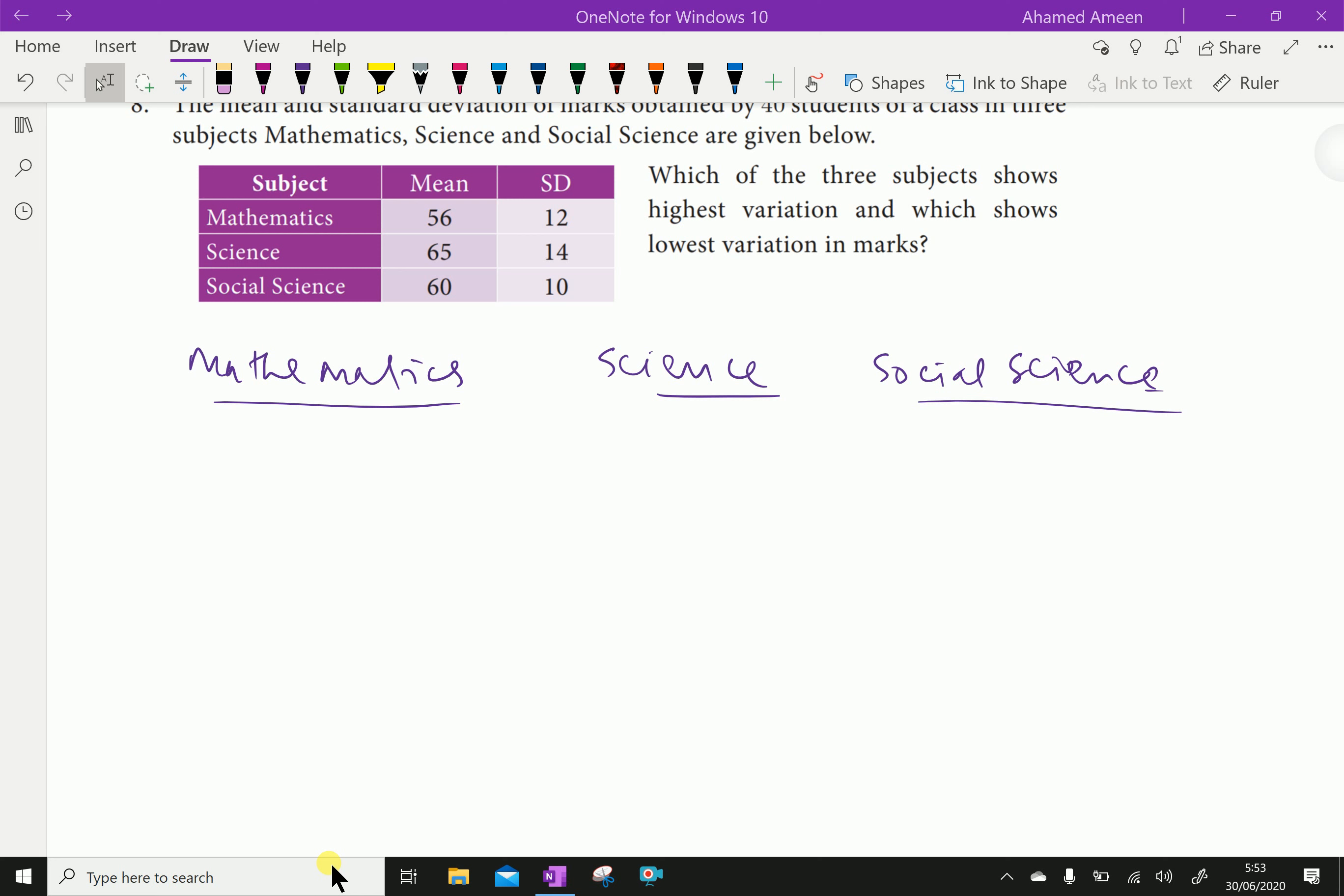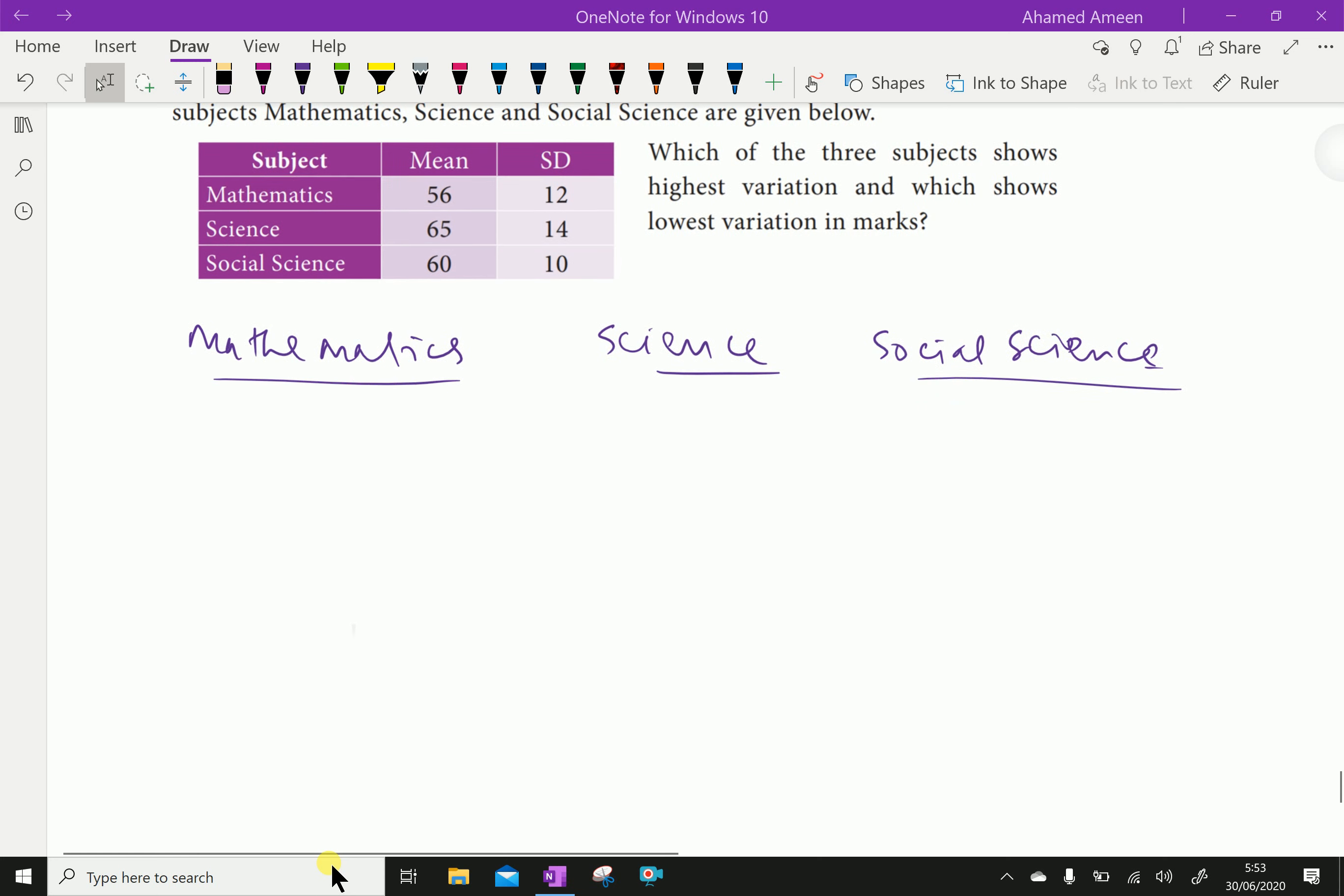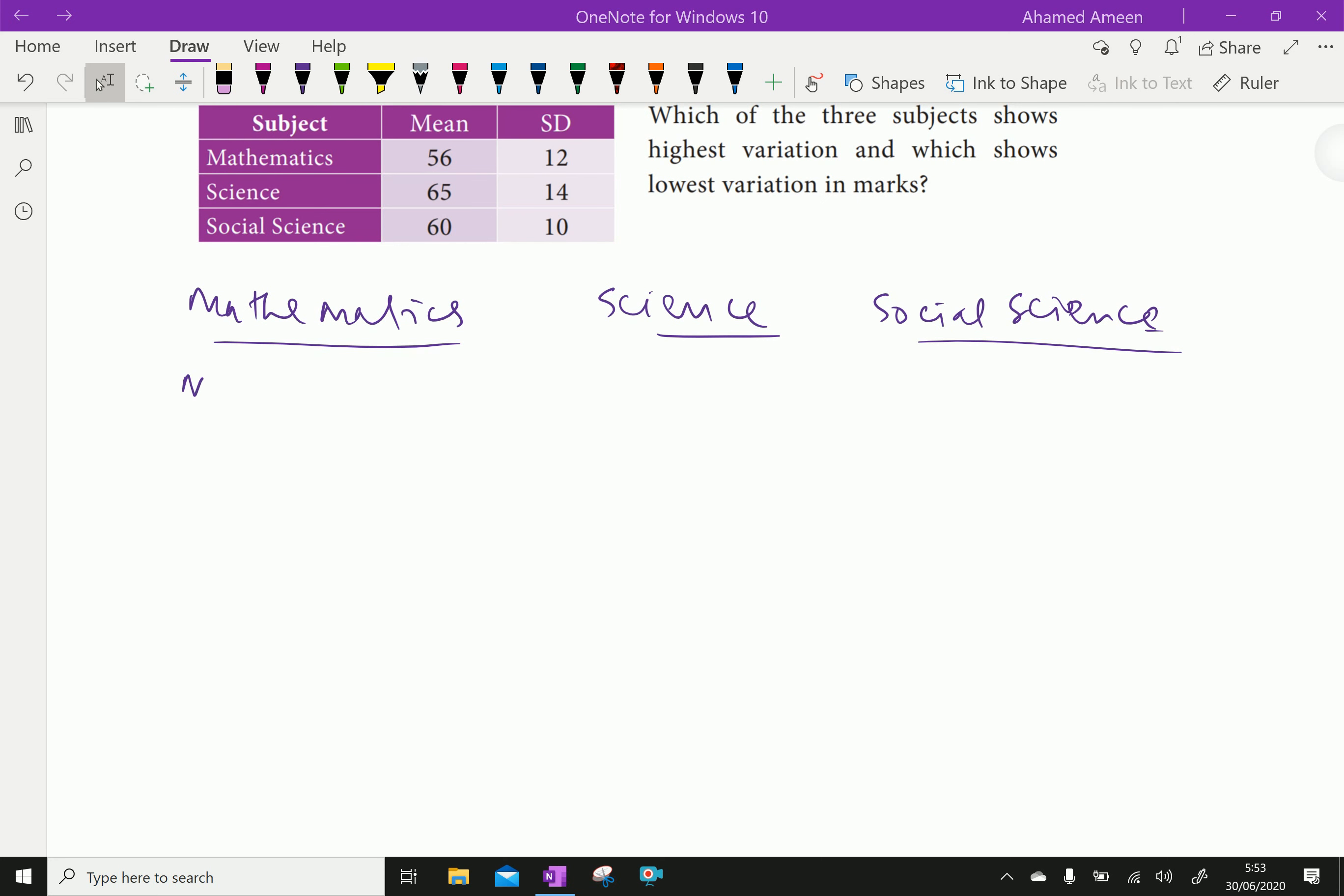Mean equals 56. Science mean is 65. Social science mean is 60.